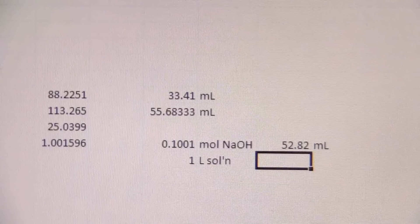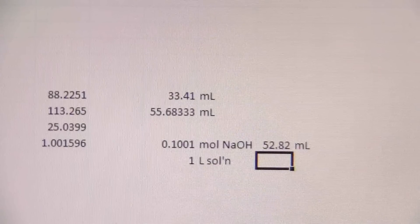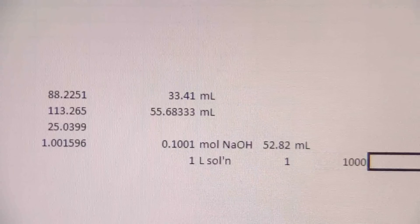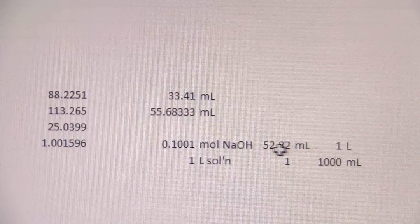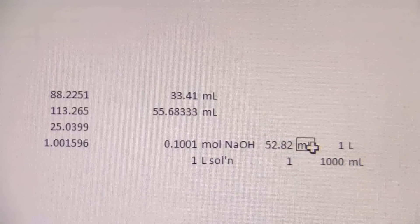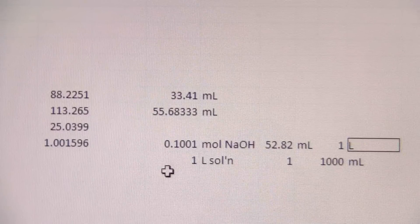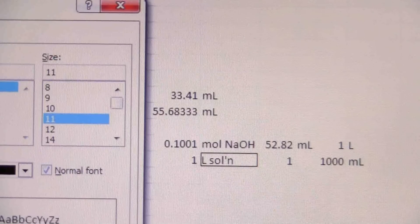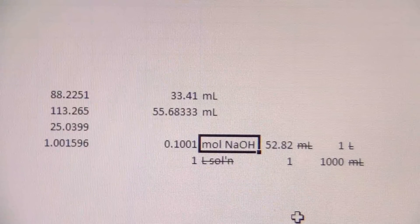And what I want is to take this molarity and it helps if I write this out. And instead of saying molarity or just 0.1001 molar NaOH, let's specify that this is moles of NaOH per liter of the solution. So now that I know it's moles per liter, I can multiply by my volume, 52.82.